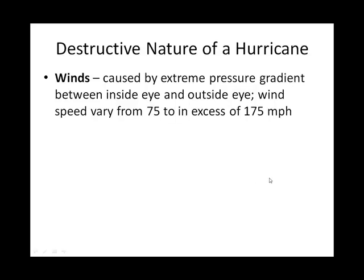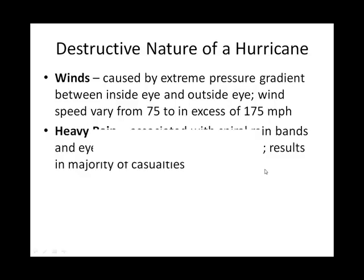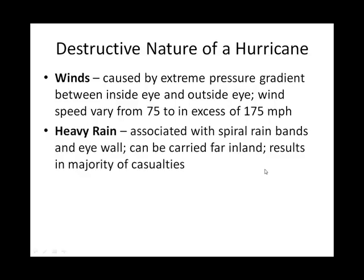Winds are how we categorize hurricanes. Winds are closest to the eye of the hurricane and start to get less intense toward the outer part of the spiral rain bands. Winds inside of the eye are very calm — it's kind of crazy, kind of creepy.